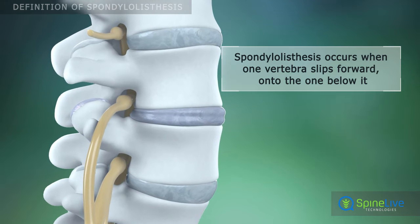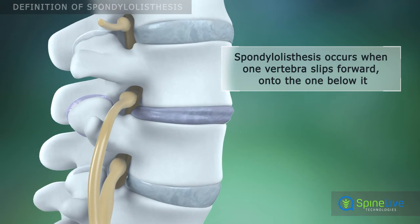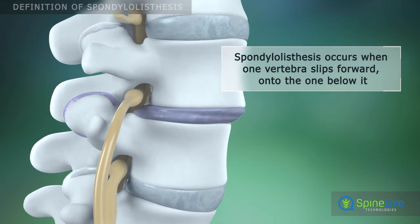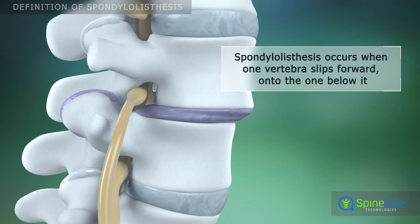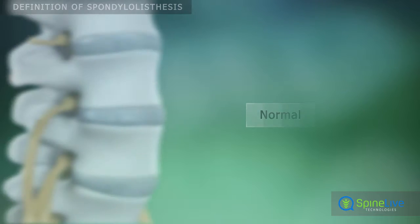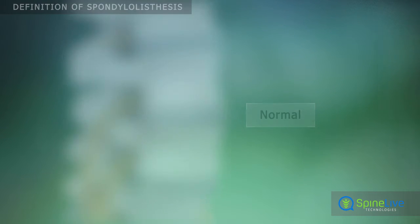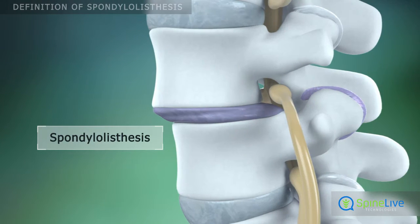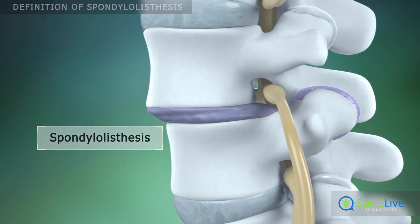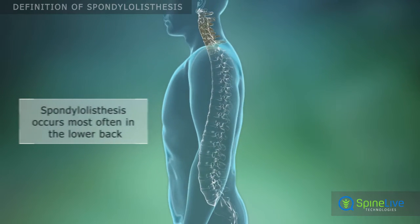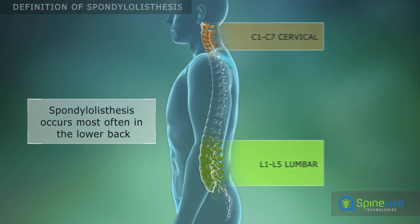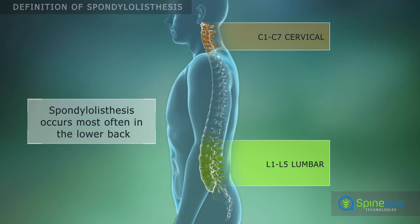Spondylolisthesis occurs when one of the vertebrae in your spine slips forward over the vertebrae that lies underneath it. This may be a result of spinal degeneration or trauma. Spondylolisthesis is most common in the lower back, but rarely may occur in the neck.